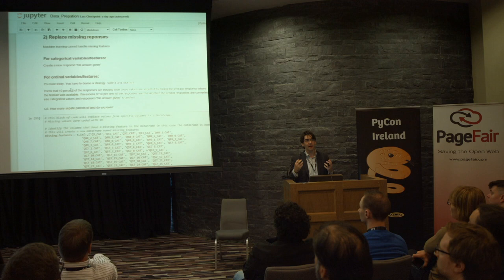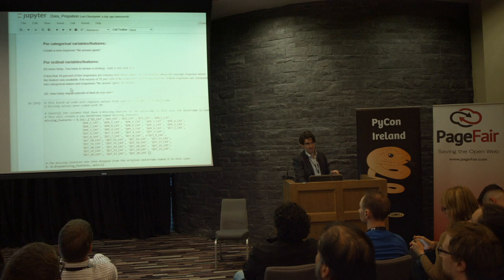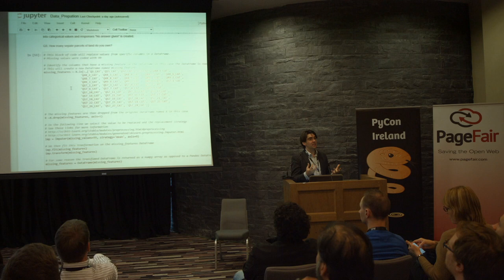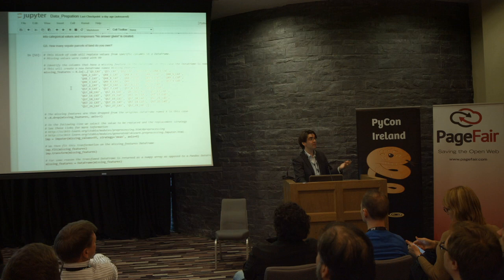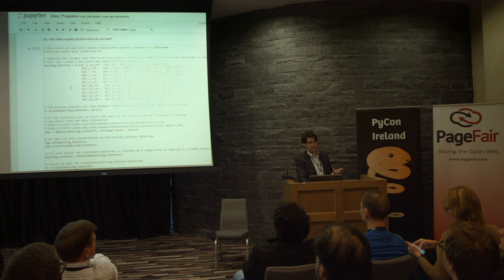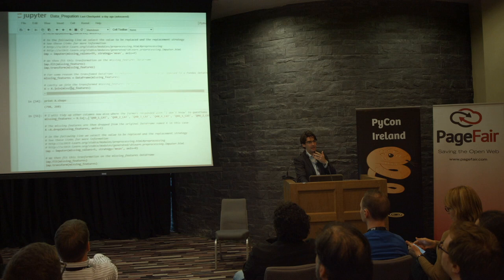The next thing you'll encounter in machine learning is you can't have missing variables. If there are missing variables, you have to devise a strategy, apply it, state it, and stick to it. For an ordinary question like 'how many parcels of land do you use?', if a small percentage of farmers didn't provide an answer, I just put in the average value of all the farmers who did supply an answer. You call this imputation.